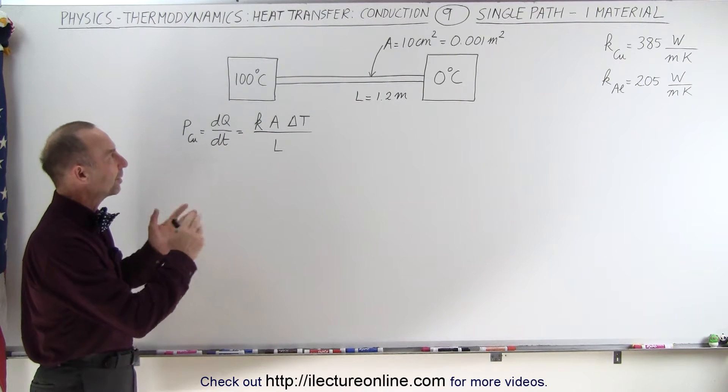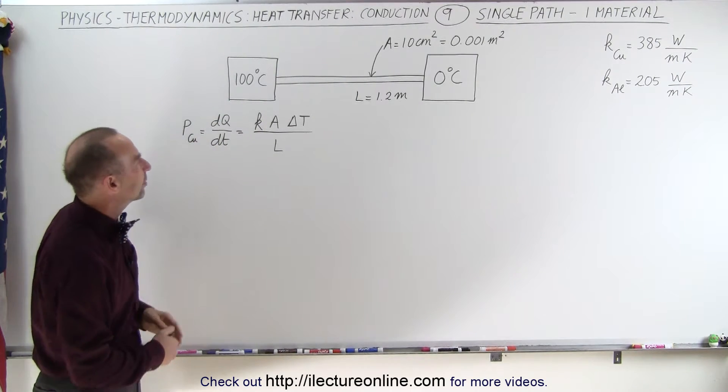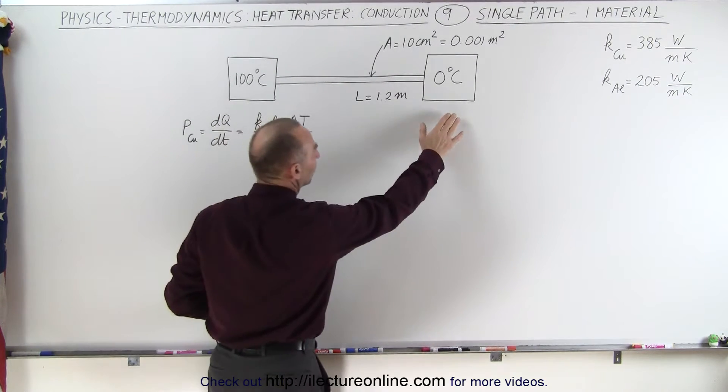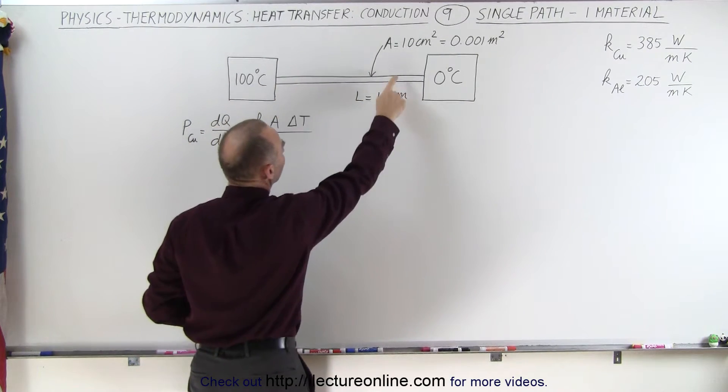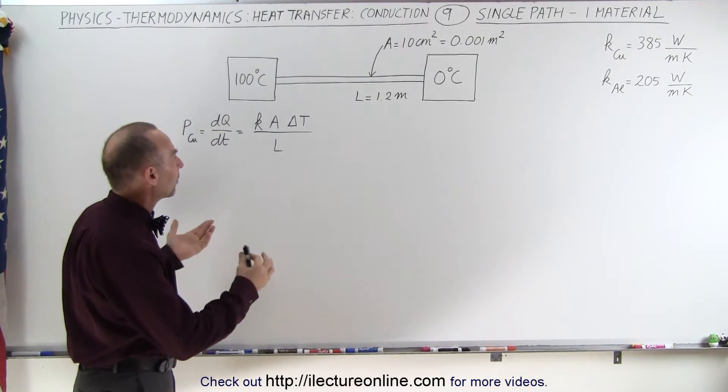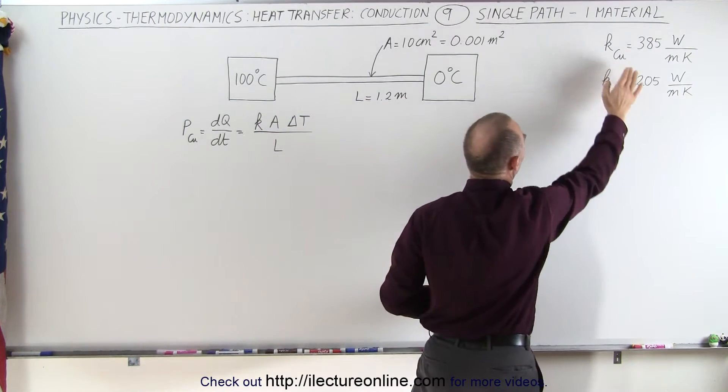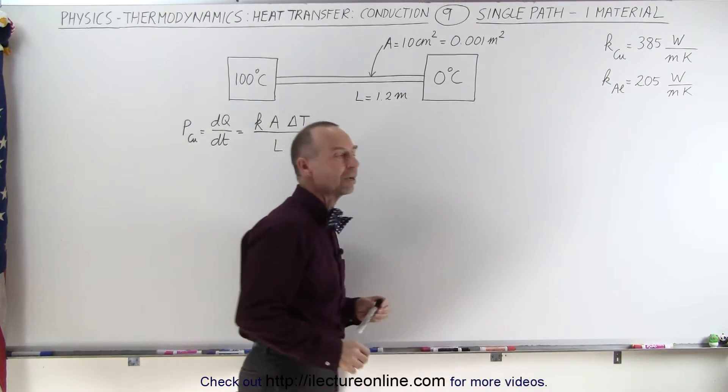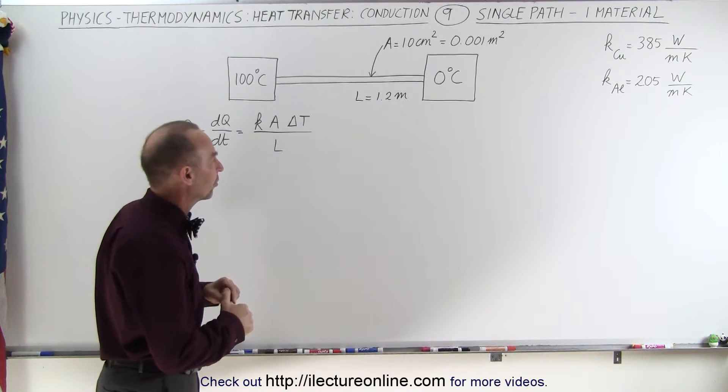So starting out with a very simple example again, we have a heat source at 100 degrees centigrade and a heat sink at 0 degrees centigrade with a connecting bar between the two that has a cross-sectional area of 10 square centimeters. We're going to do this problem twice. The first time, we're going to assume that the bar is made out of copper. The second time, we're going to assume that the bar is made out of aluminum. And there we have the heat conductivity constant for both materials.